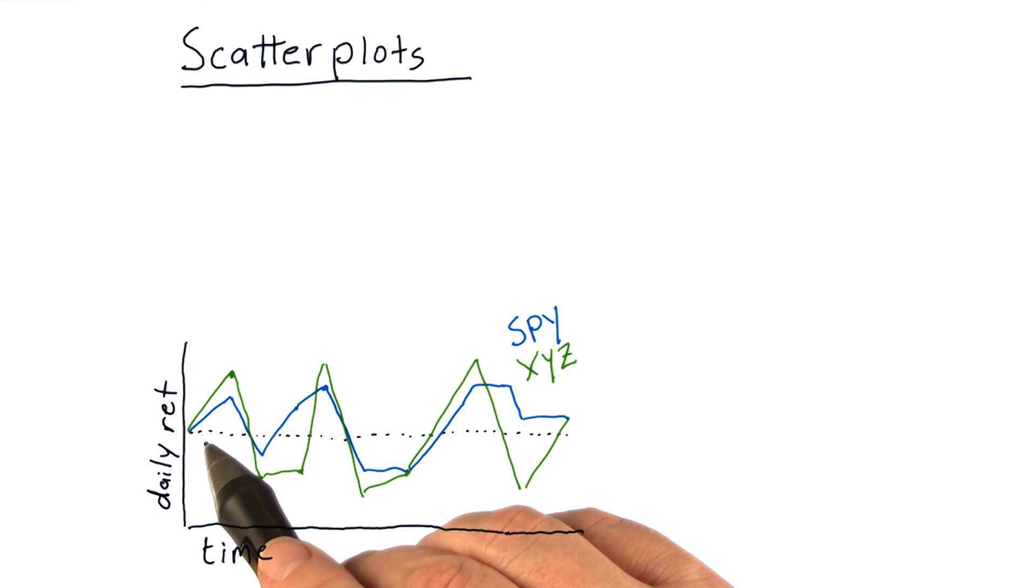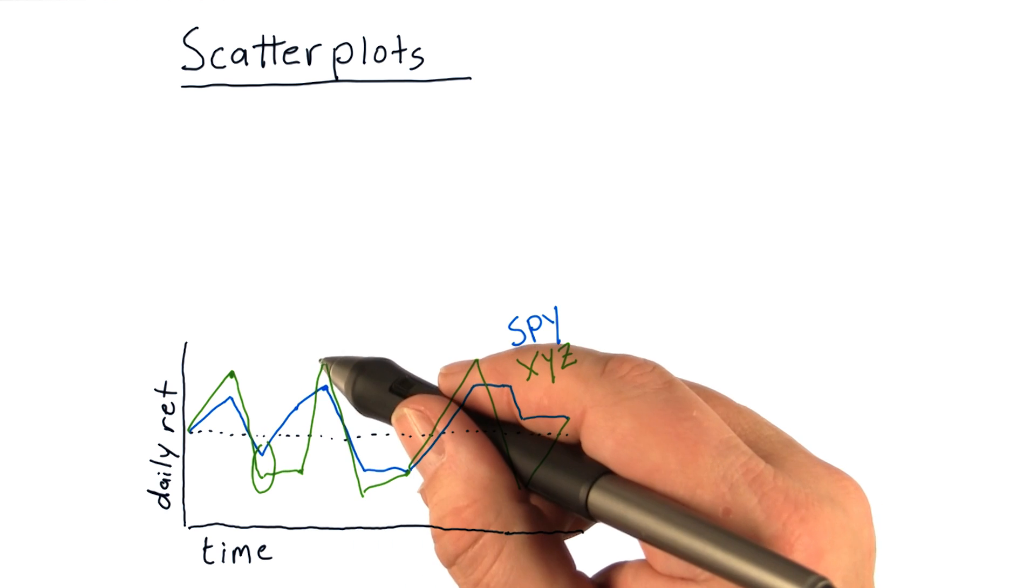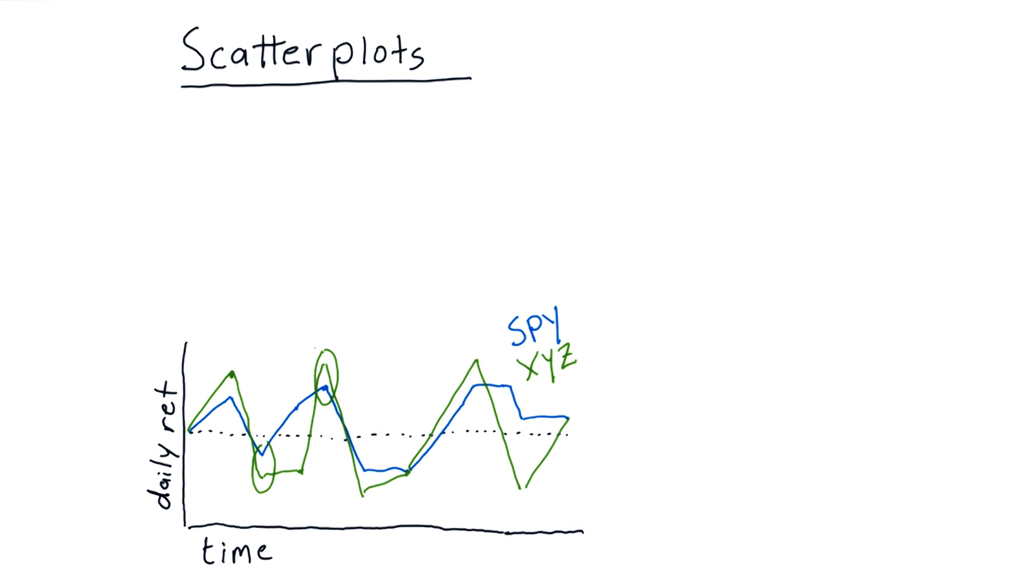Now note here that frequently XYZ moves in the same direction as SPY, but it also sometimes moves a little bit further, like in these sections here. We'll be able to visualize those differences in a scatter plot.